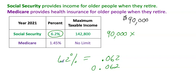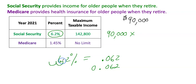Another way is to move the decimal point two places to the left. I call this the butt cheek method because it looks like a butt cheek, but it helps you remember the process. So the decimal moves from after the 2 to give you 0.062.